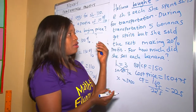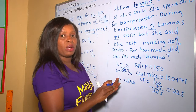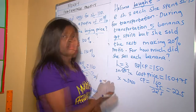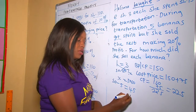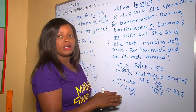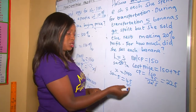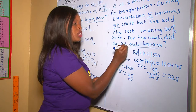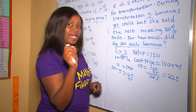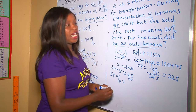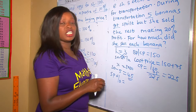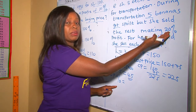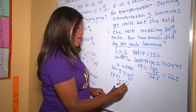During transportation, 5 bananas got spoiled. So out of 50 bananas, 5 got spoiled, meaning 50 minus 5 equals 45 bananas remaining. These 45 bananas are what she sold. She sold the rest making a 20% profit. We now need to get the selling price percentage. Since the buying price percentage is always 100%, and she made a 20% profit, she sold at 100 plus 20, which is 120%.